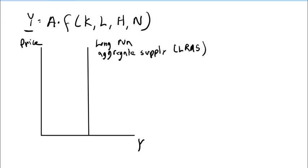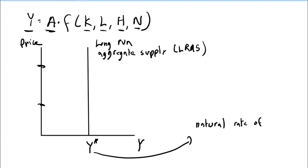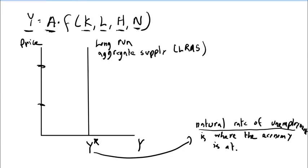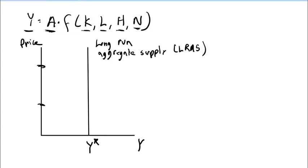Why is this called long run? In the long run, we believe that given the level of technology, capital, labor, human capital, and natural resources, we can only utilize all these inputs up to a certain level. This vertical line is independent of price — no matter what the price is, this is the maximum we can produce. We call it Y star. Y star is where the natural rate of unemployment is — the maximum level of output given current resources, at the lowest level of unemployment the economy can achieve.